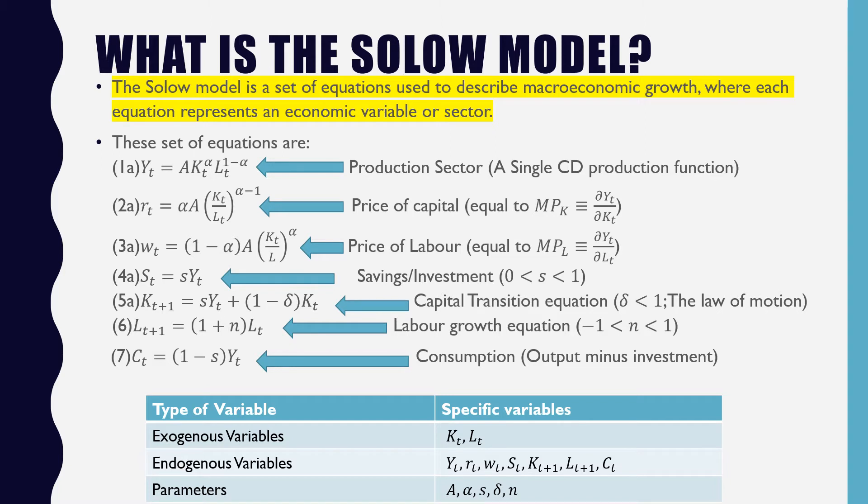savings or investments where our savings rate is between 0 and 1, our capital transition equation, also called a law of motion where our depreciation rate is less than 1, our labor growth equation where our population growth is between negative 1 and 1, and a consumption equation.